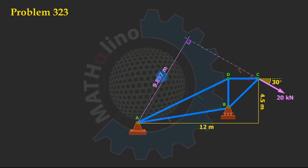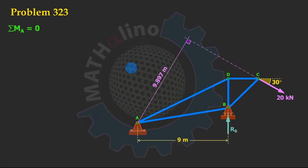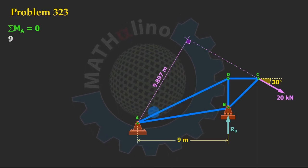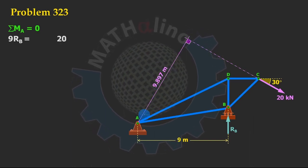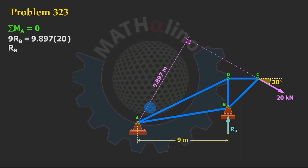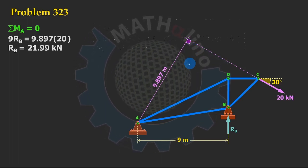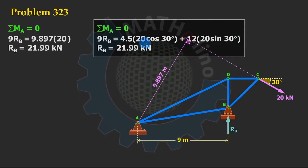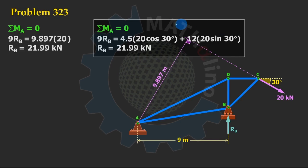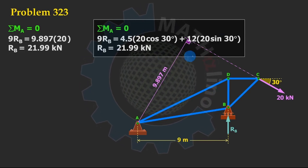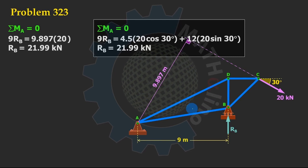Now we have the moment arm and can solve for the reaction at B. Summation of moment at A equals zero: counterclockwise 9 times RB equals clockwise 20 kilonewtons times 9.897 meters, giving us the answer for RB. Comparing with the previous solution, we only replaced the component terms with this moment arm. In most cases, the previous solution is actually more convenient — this method involved complex angle-finding and moment arm calculations.